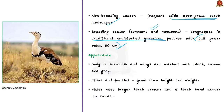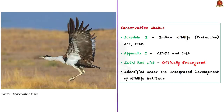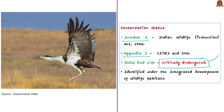In terms of appearance, the body is brownish with wings marked in black, brown, and grey. Males have a larger black crown and a black band across their breast. Regarding conservation status: the Great Indian Bustard is listed in Schedule 1 of the Indian Wildlife Protection Act of 1972, in Appendix 1 of CITES and CMS, and listed as Critically Endangered on the IUCN Red List. It has also been identified as one of the species for the recovery program under the Integrated Development of Wildlife Habitats, a program of the Ministry of Environment, Forest and Climate Change.